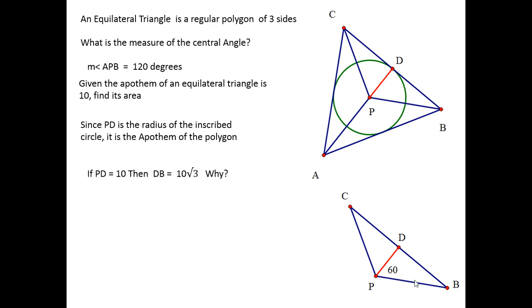Since PD, the apothem, is 10, DB. And since PD is the side opposite the 30-degree angle, DB is the side opposite the 60, which, again, from 30, 60, 90, is 10 root 3. So, therefore, the side, the entire side, CB, is twice that, or 20 root 3.